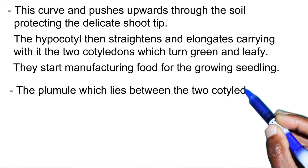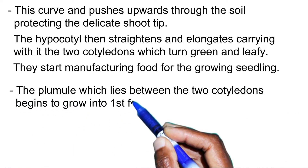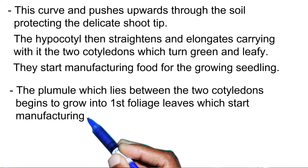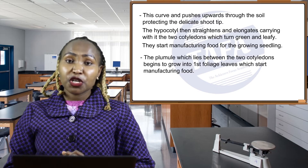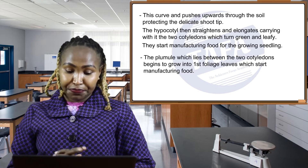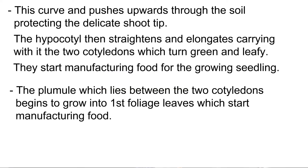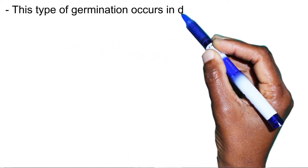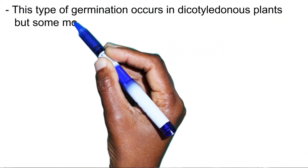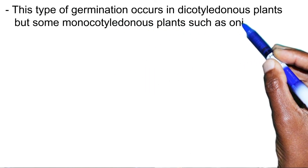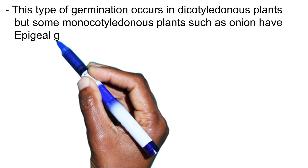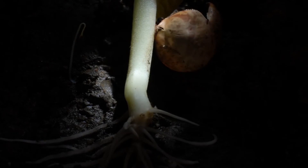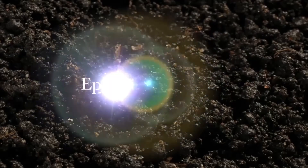Again, note the plumule, which lies between the two cotyledons, begins to grow the first foliage leaves, which start manufacturing food. This type of germination occurs in dicotyledonous plants, but some monocotyledonous plants such as onions also have epigeal germination.